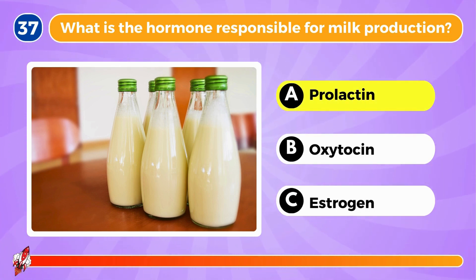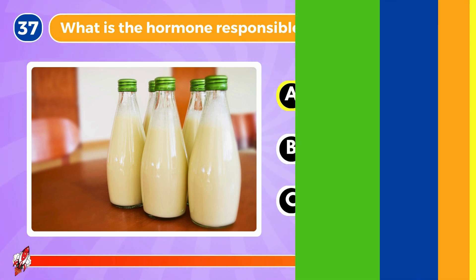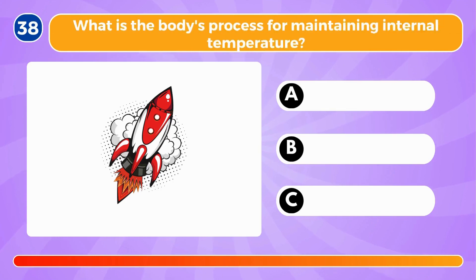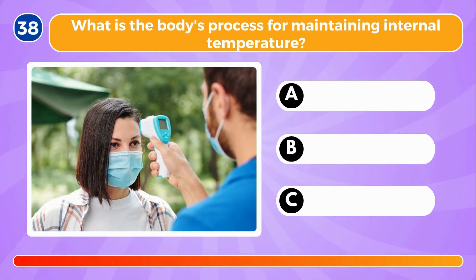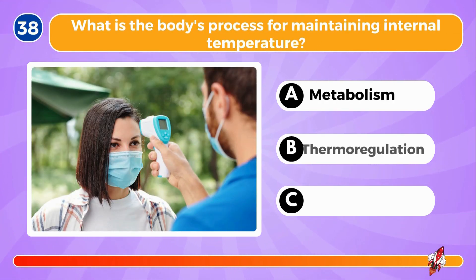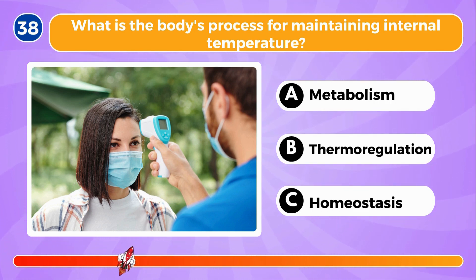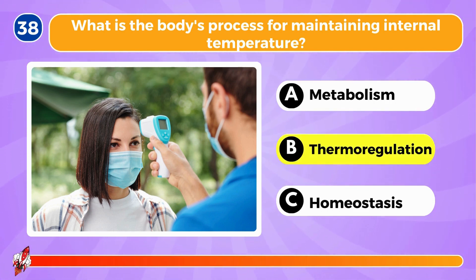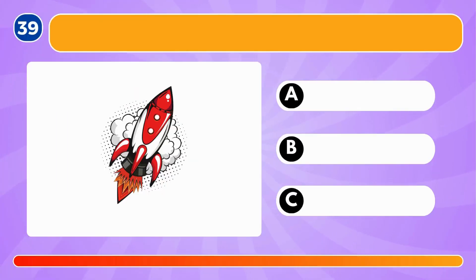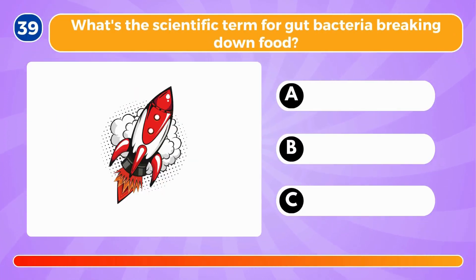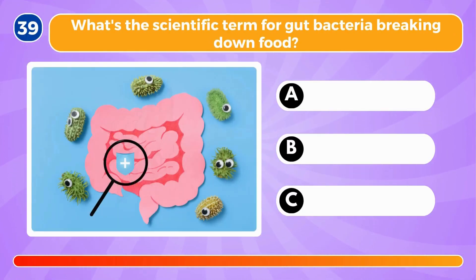What is the hormone responsible for milk production? It's prolactin. What is the body's process for maintaining internal temperature? It's called thermoregulation.